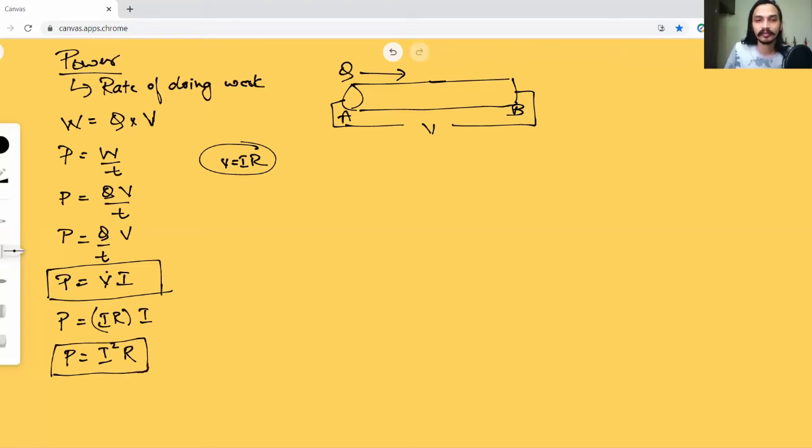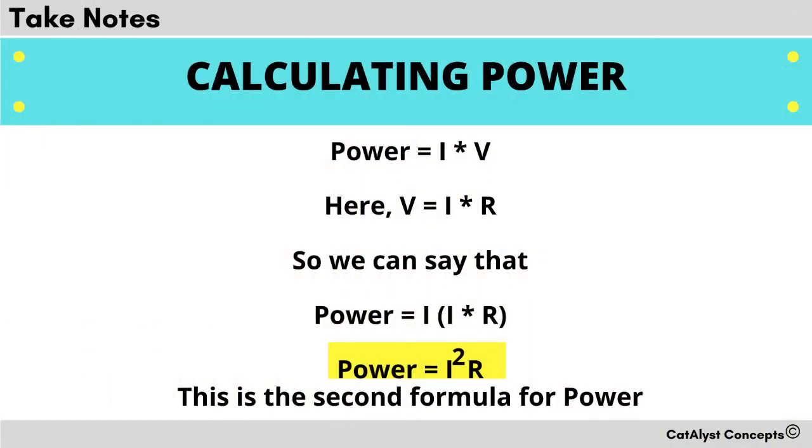So, for example, if your question has V and I, then you can use this form. But if it doesn't have V, it has IR. You can use this formula or if it's asking you for any basically having any two variables in this and asking for the third one.